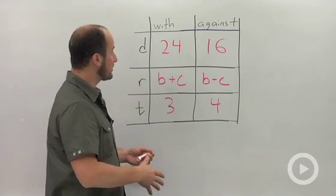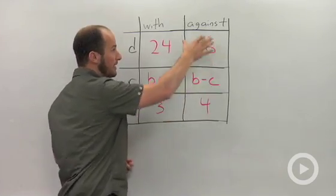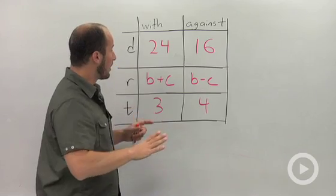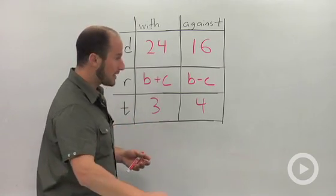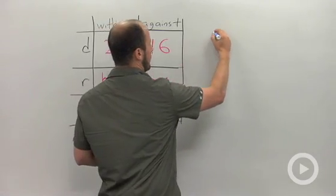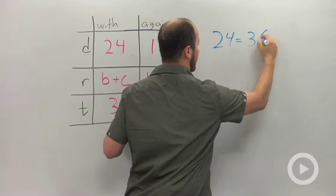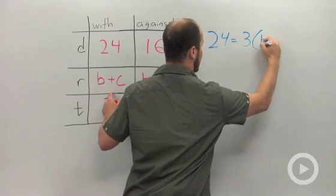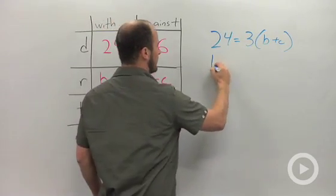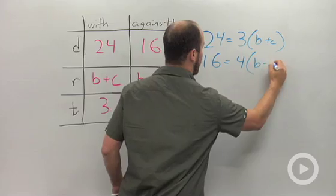What we have then is an equation for with the current and an equation for against the current. Putting these together, distance equals rate times time. For this equation we end up with distance equals rate, which is B plus C, times time. And we have another equation for against: 16 equals 4 times B minus C.